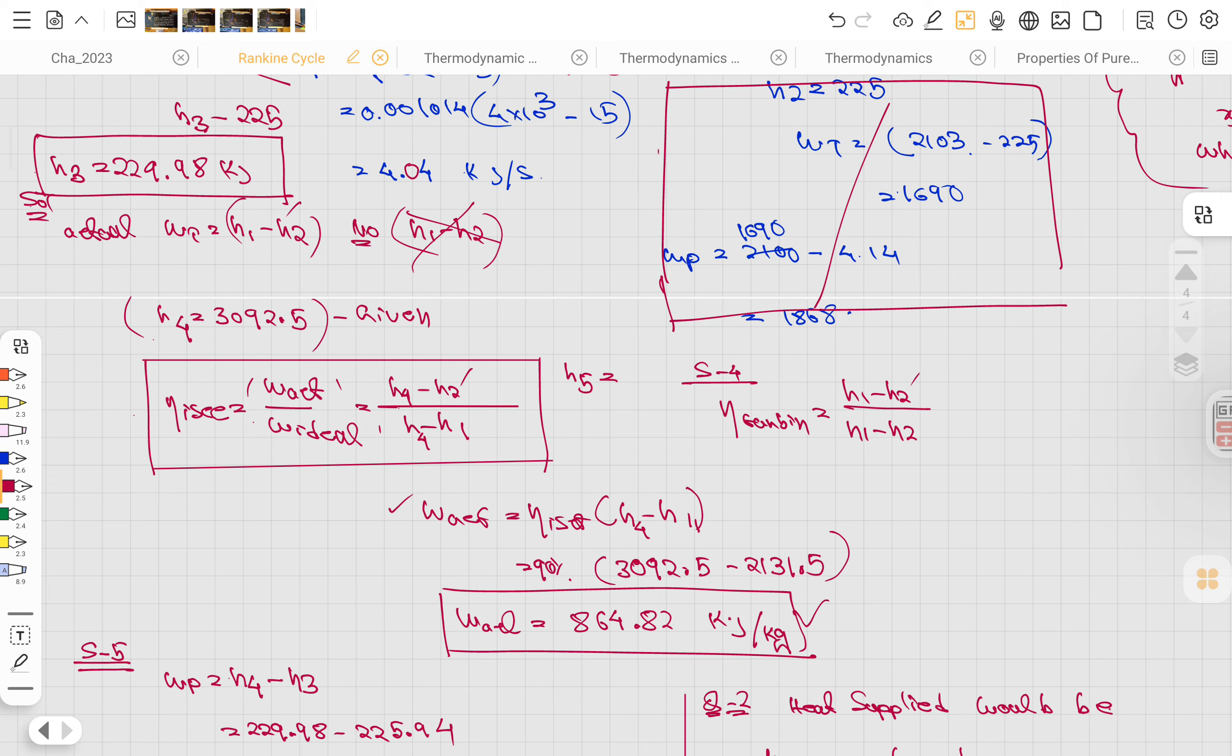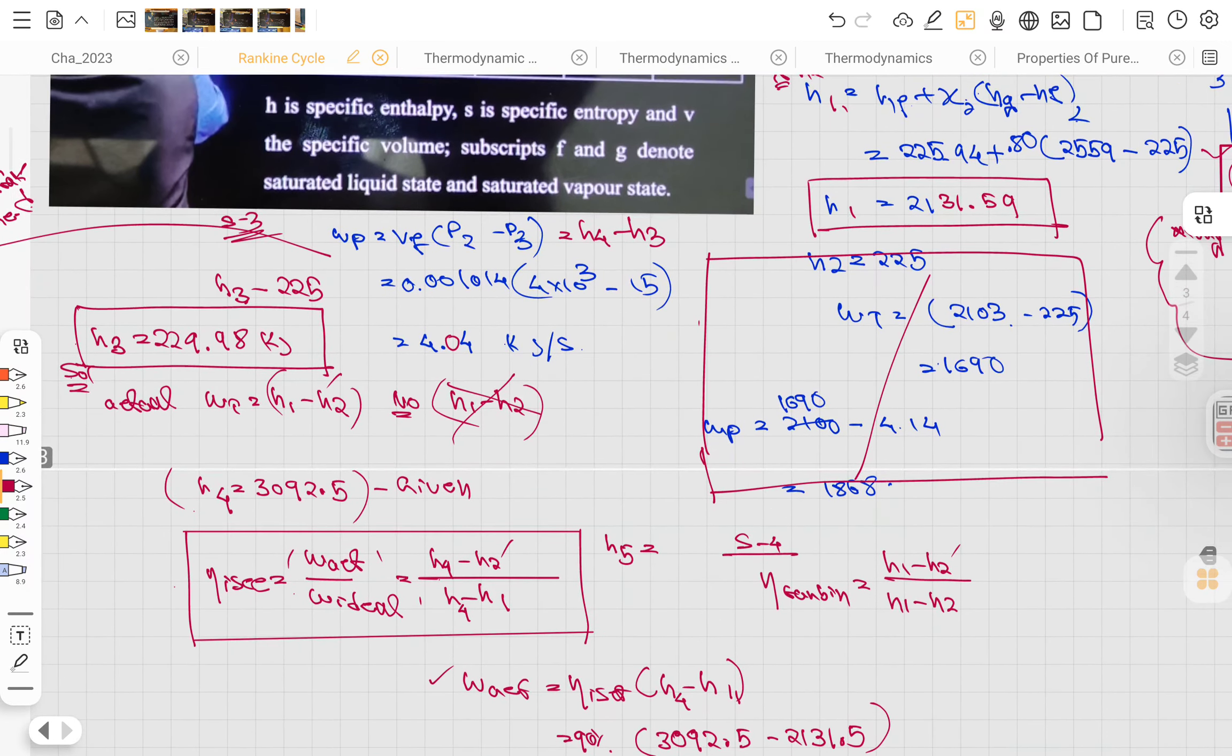How do we get w ideal? From the isentropic equations, we multiply. Then coming to the pump work, the pump work formula is w pump = v (the specific volume), that's the condensed line - the constant pressure process. It's the volume of fluid, vf, times p2 minus p3.